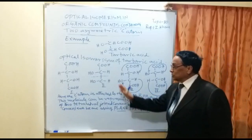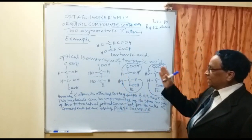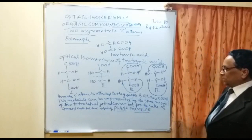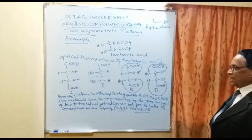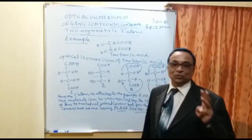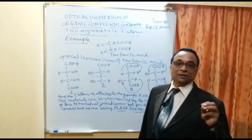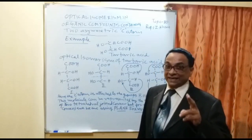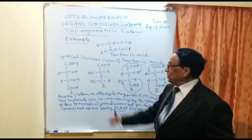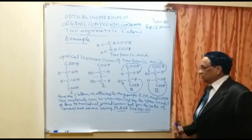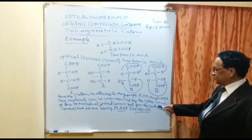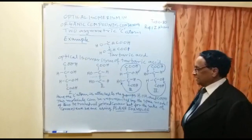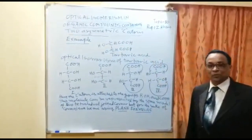This is the optical isomerism of tartaric acid. Each asymmetric carbon atom is attached to three types of substituents: hydrogen, a hydroxyl group, and a COOH group. Because each carbon has three different types of substituents, both carbon atoms in tartaric acid are asymmetric, giving us four isomers. This molecule can be represented by the space model of two tetrahedra joined together, but for convenience we use planar Fischer projections.